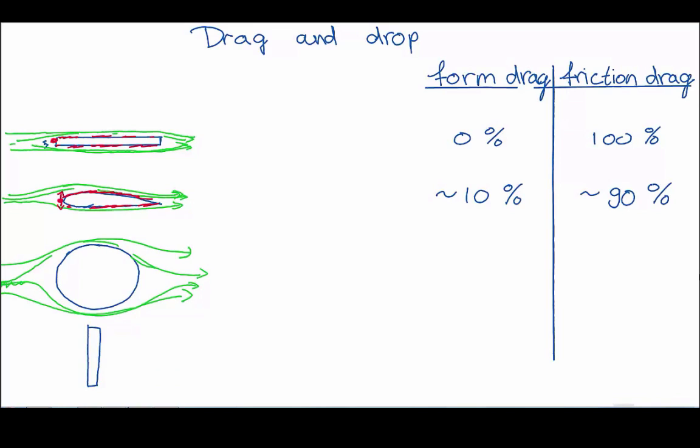The first one being the form drag. There has to be a lot of movement from the flow lines to go around the object. It's a big, bulky object. The flow is not passing very well. And then there is a little bit of skin in contact with the flow, a little bit of surface area.